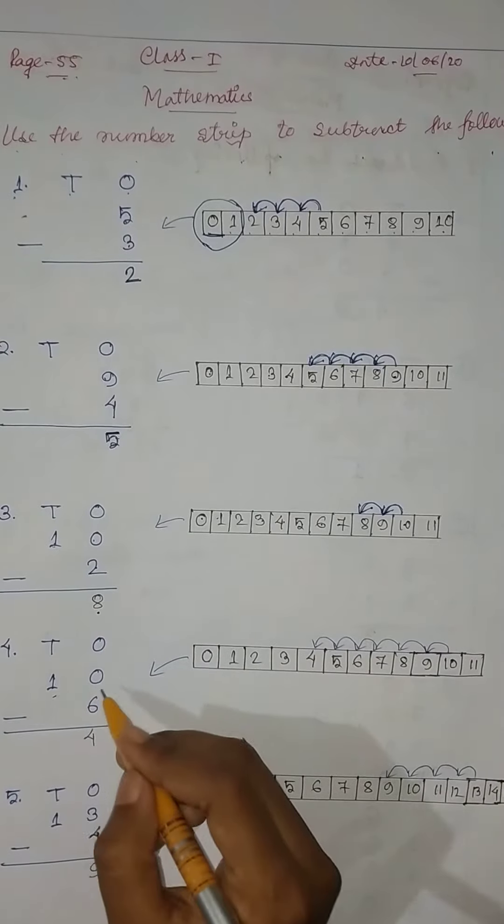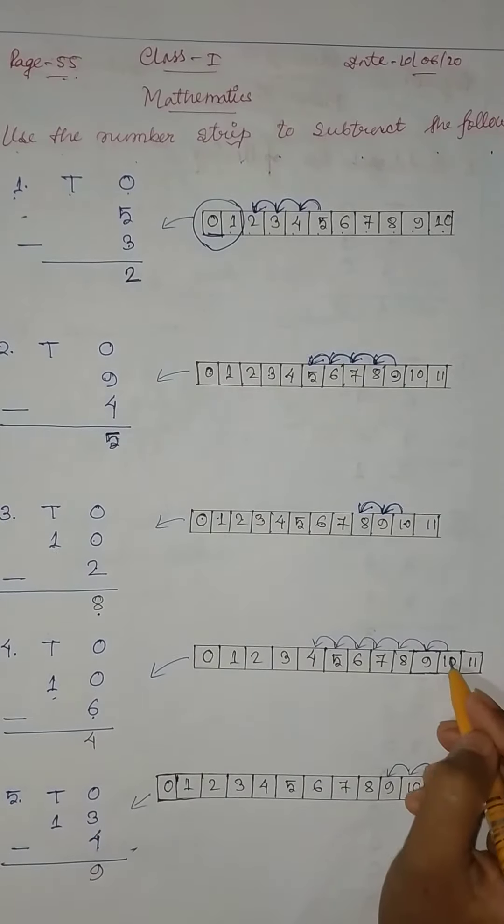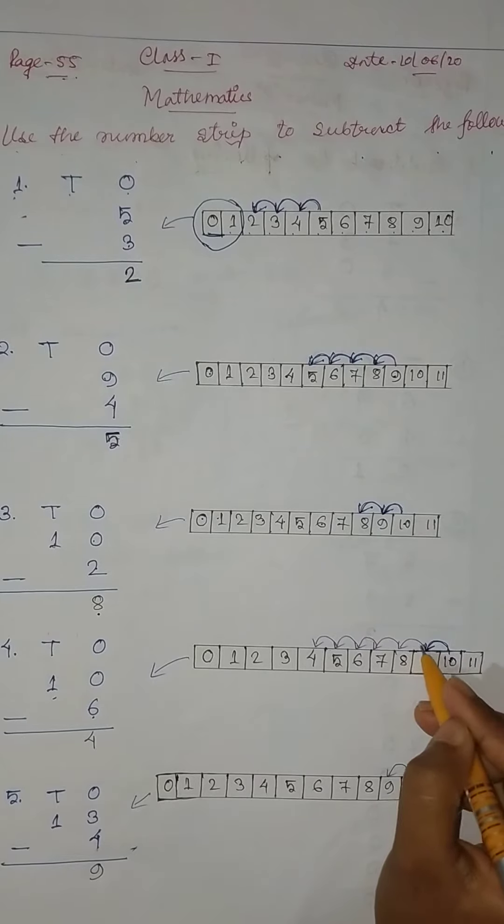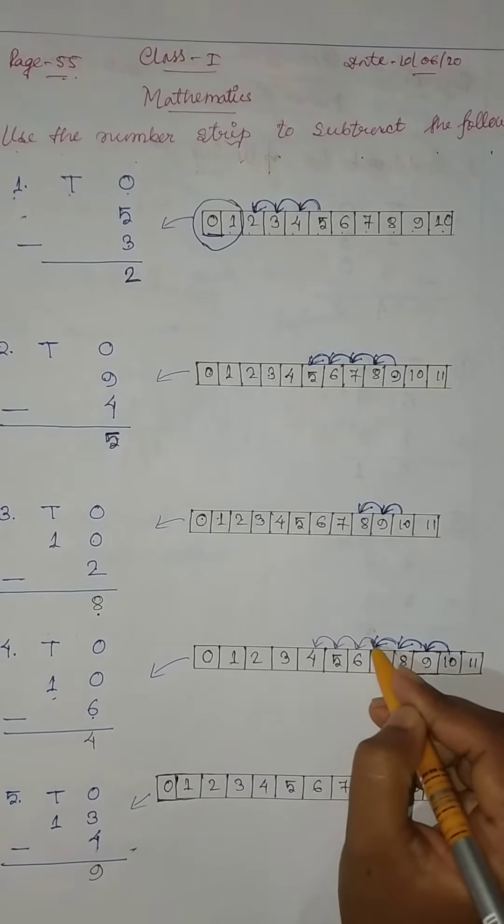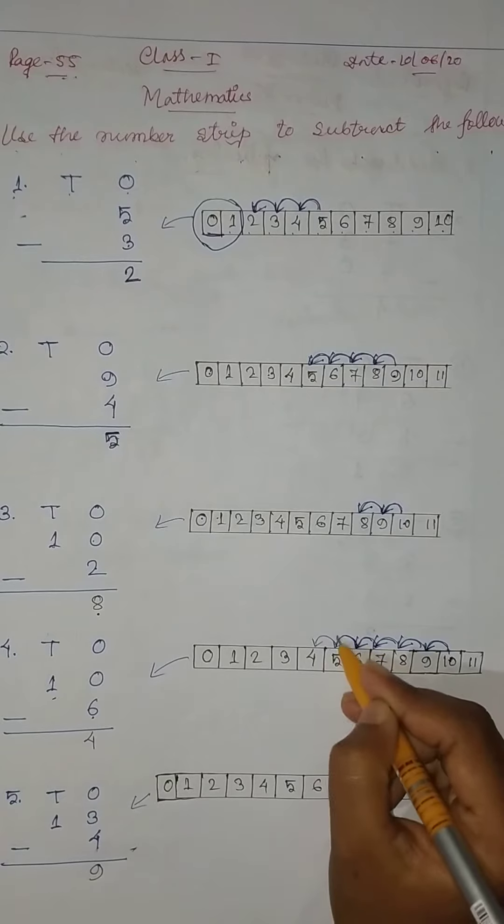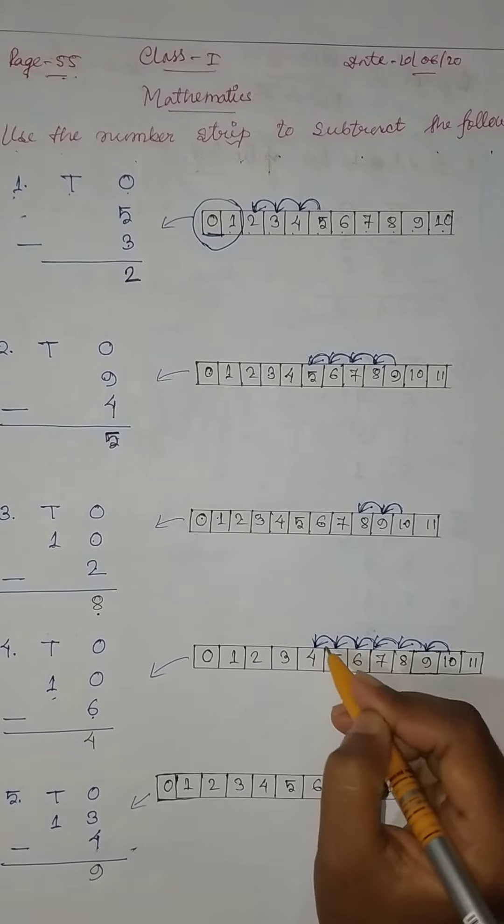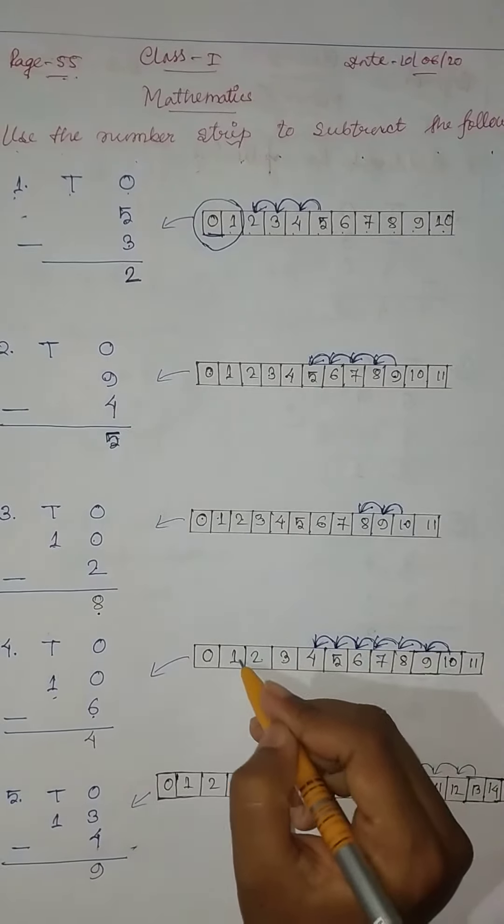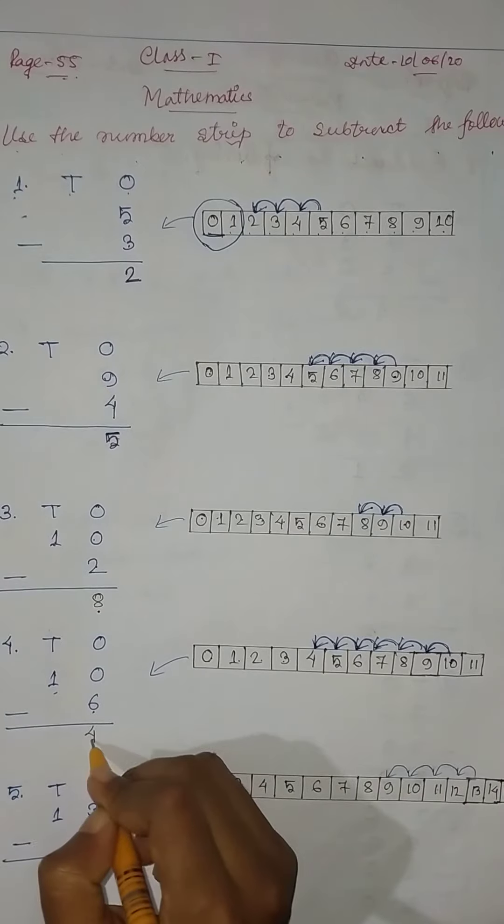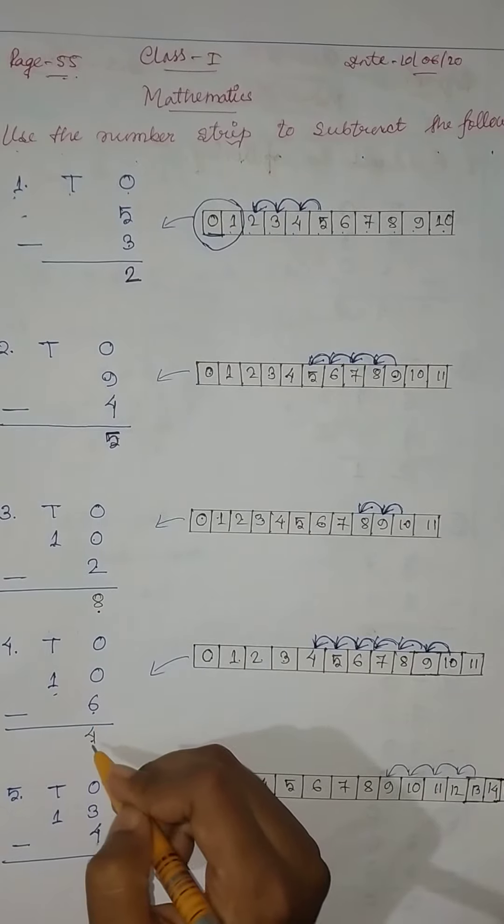Then, 10 minus 6. 10. 1, 2, 3, 4, 5, 6. So here, 1, 2, 3, 4. So 4. 10 minus 6 equal to 4.